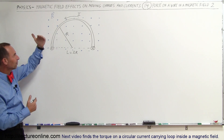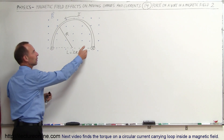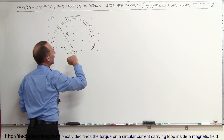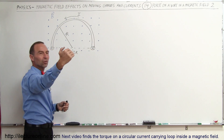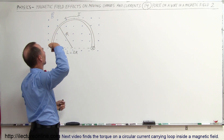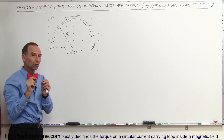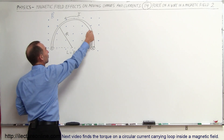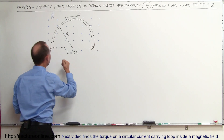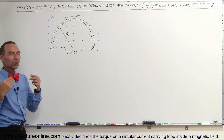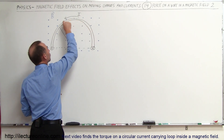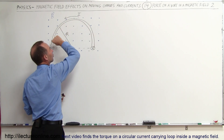Notice the magnetic field is pointing out of the board. We have a current carrying wire — in this case it's not a straight wire, it's a semicircle shape. The current goes into the board, so assume we have a wire going down, around like this, and coming back out. The only portion affected by the B field is the curved section, because the straight portions are parallel to the B field — there's no force there. Only the section where the direction is always perpendicular to the B field is affected.